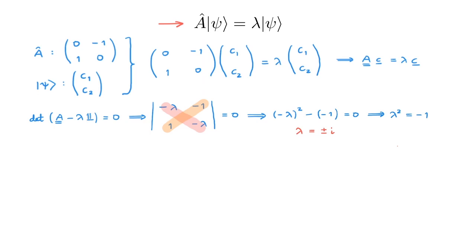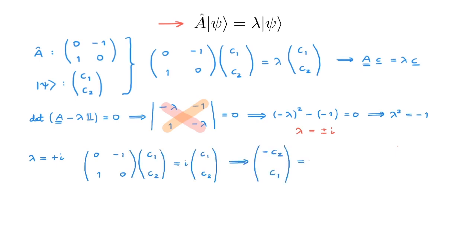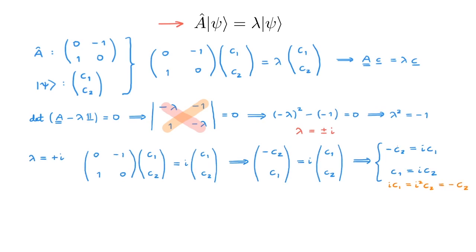The next step is to find the eigenvectors. Let's start with the eigenvector corresponding to eigenvalue plus i. The eigenvalue equation then becomes this. We calculate the matrix product and obtain two equations: minus c2 equals i c1 from the first entry, and c1 equals i c2 from the second entry. These two equations contain the same information — multiplying the second by i reproduces the first — so we only need to focus on one of them. A solution to the first equation is c1 equals i, which then gives c2 equals 1, and we can construct the eigenstate corresponding to eigenvalue plus i.